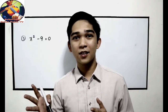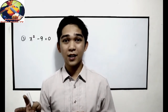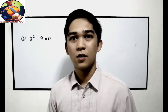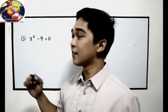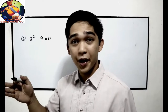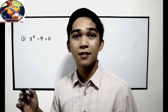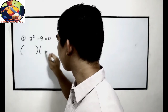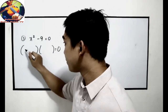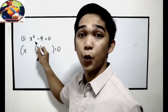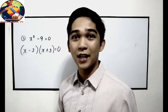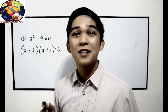Now let's have solving quadratic equations by factoring using the difference of two squares. Take note that our given terms must be perfect squares. Example number 3: x squared minus 9 equals 0. x squared is a perfect square; 9 is also a perfect square. So we can apply the difference of two squares. The factors are x and x for x squared, and negative 3 and positive 3 for negative 9, since negative 3 times 3 is negative 9. Now equate to 0.